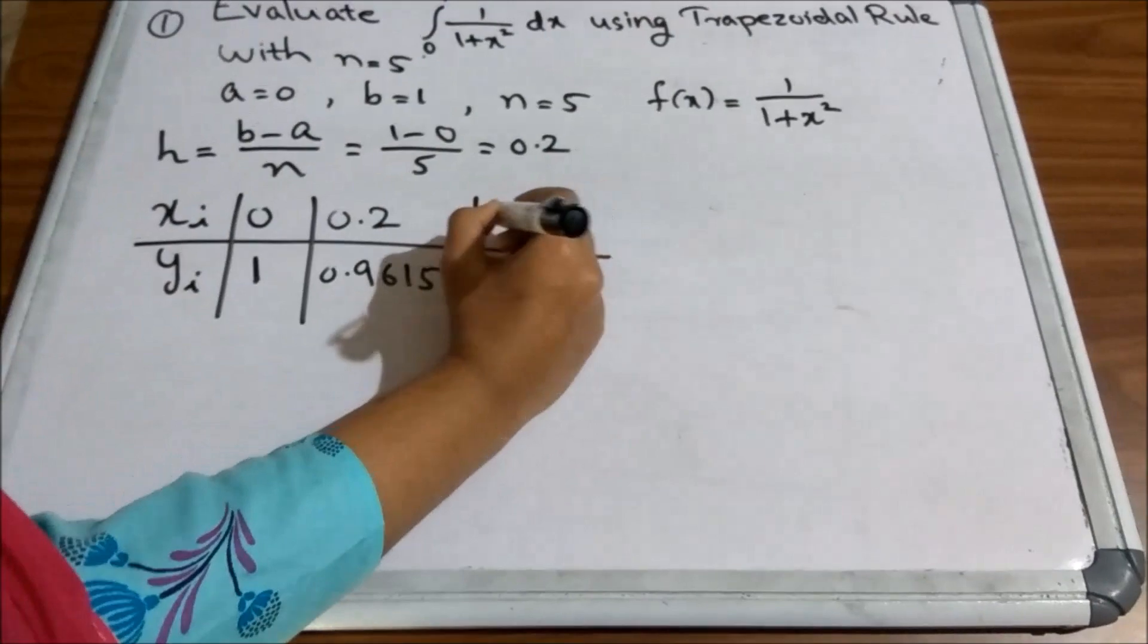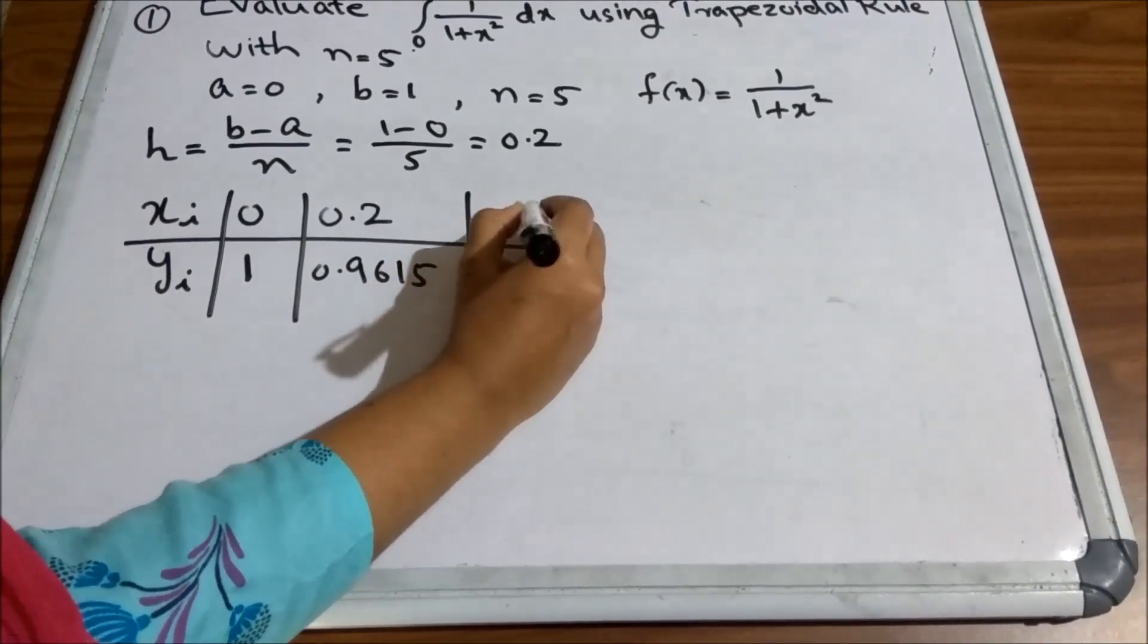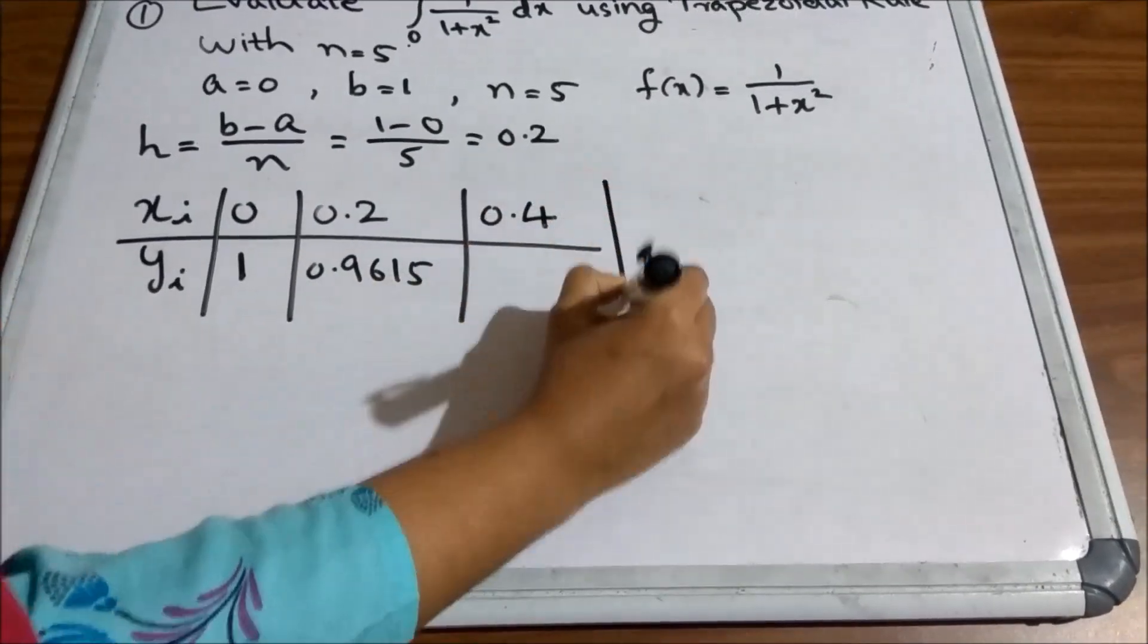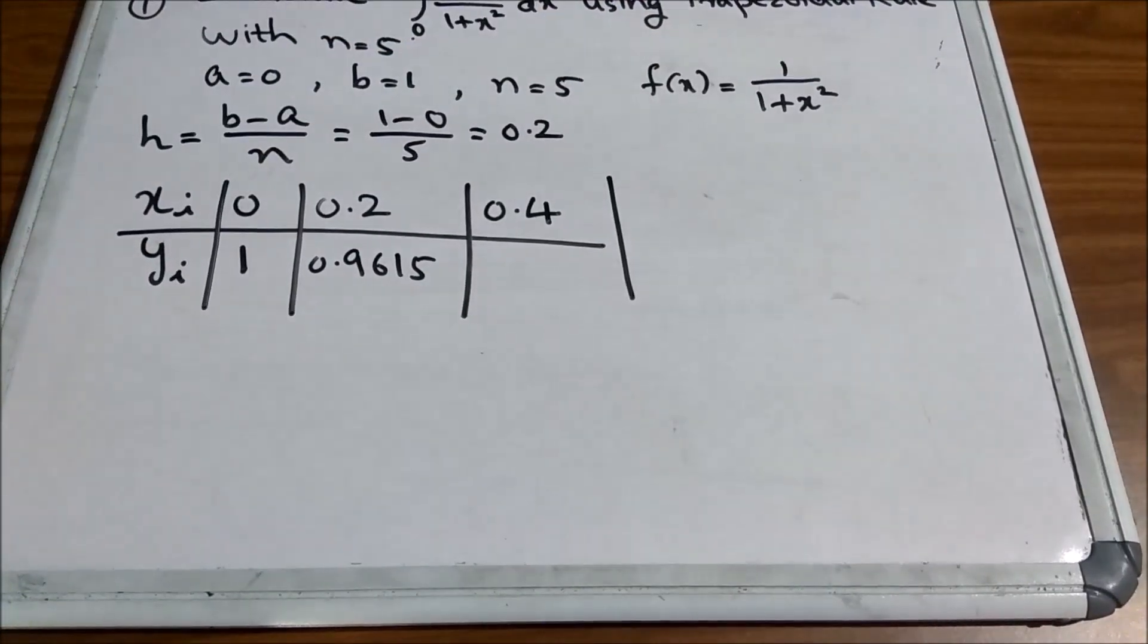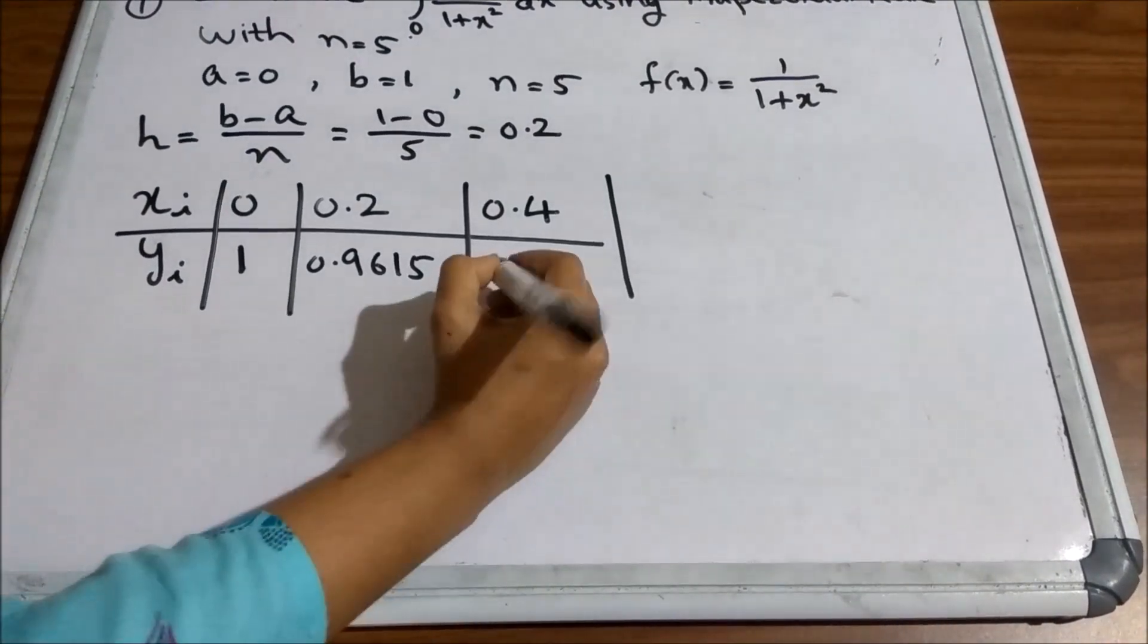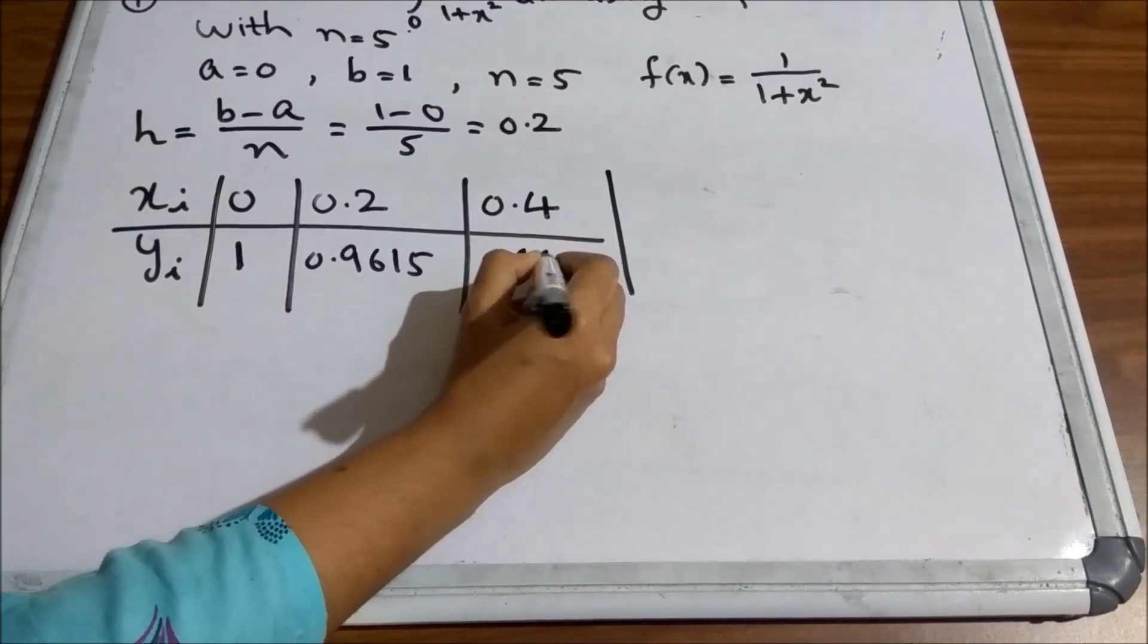Then, next x2 will be 0.4 and y2 will be 1 by 1 plus 0.4 the square which is 0.8621.